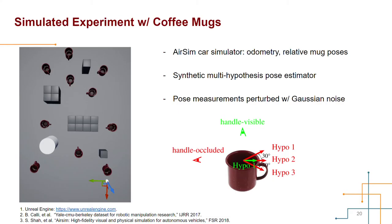We also conducted a simulated SLAM experiment in the Unreal Engine with 10 coffee mugs as landmarks. We used the mug model from the YCB dataset and placed them in a virtual environment around some obstacles. A car mounted with a mono camera is created in the environment using the AirSim car simulator. We controlled the car to move around the mugs and collected odometry, relative mug poses, and images from the AirSim.